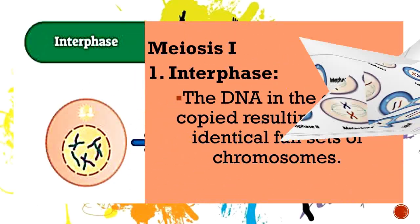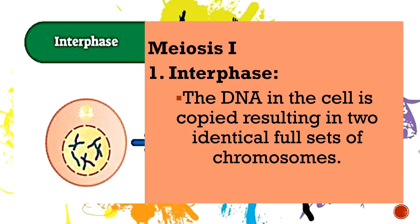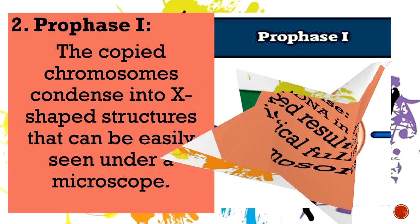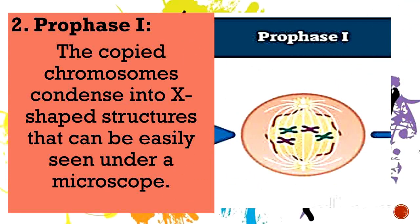The initial stage is interphase. During interphase in meiosis 1, the DNA in the cell is copied, resulting in two identical full sets of chromosomes. Next is prophase 1, where the copied chromosomes condense into X-shaped structures that can be easily seen under a microscope.